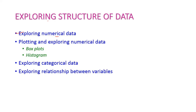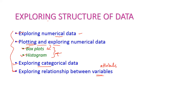We will try to understand which attributes are numerical and which are categorical, and then explore them separately. For visualization of numerical data, there are two types: box plot and histogram. These help us understand how the data is distributed in the dataset. After that, we will see exploring categorical data and the relationship between variables. All these topics will be covered in our forthcoming classes.